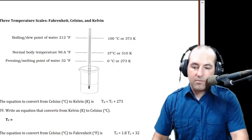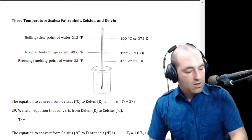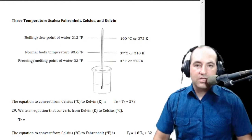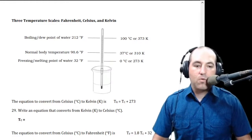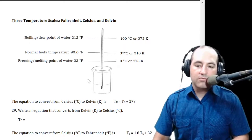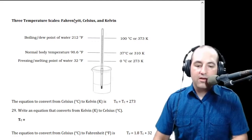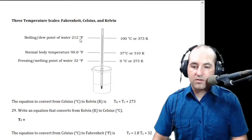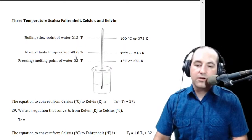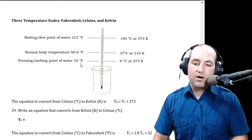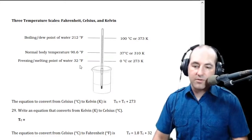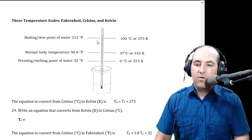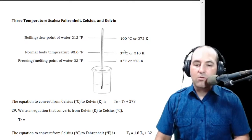The last thing we're going to do in this unit is temperature scales. You don't need to memorize these equations — you'll always have access to the temperature conversion equations — but I do want you to know how to use them and why. If you grew up in this country you're probably most used to the Fahrenheit system, where water boils at 212°F, normal body temperature is 98.6°F, and the freezing point of water is 32°F. In Celsius, water boils at 100°C, freezes at 0°C, and normal body temperature is 37°C.